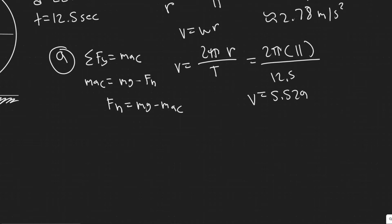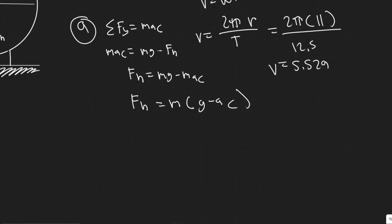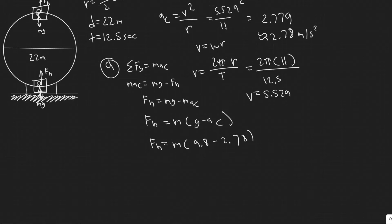So now that we want to find the normal force, it's really just a matter of plugging it in. So factoring out the M, you have its mass times G minus AC. So keep in mind, F sub n is equal to M times 9.8 minus 2.78, we'll say 2.78.